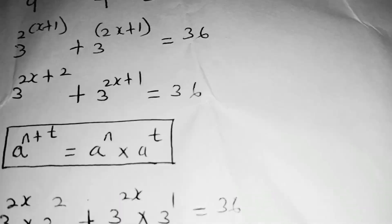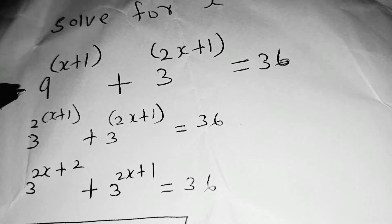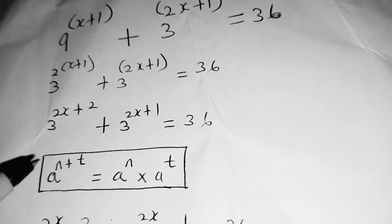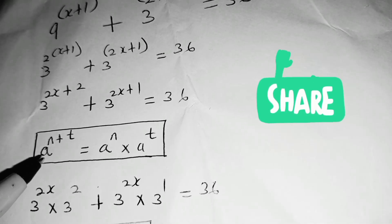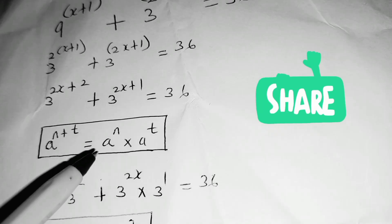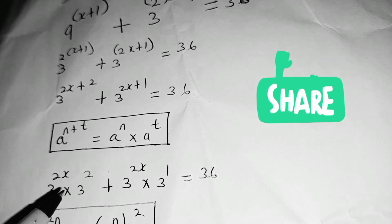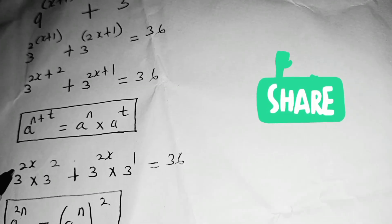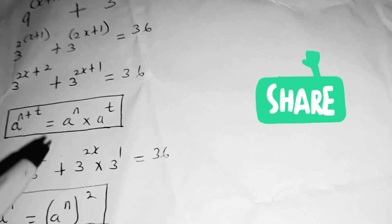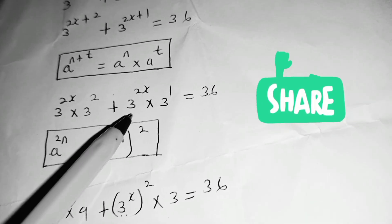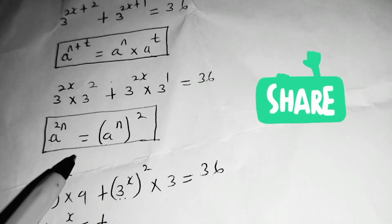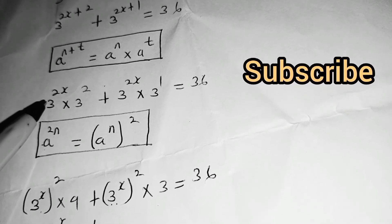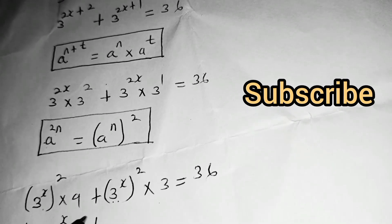So that is how you solve for x. To recap: the first thing is to express 9 to base 3 as we have done. Then remove the bracket on the index. After removing the bracket, make use of the identity a^(n+t) equals a^n times a^t. So instead of 3^(2x+2) we write 3^(2x) times 3 squared, and instead of 3^(2x+1) we write 3^(2x) times 3^1. Then we use the law a^(2n) equals (a^n) squared, so instead of 3^(2x) we write (3^x) squared, and 3 squared is 9.